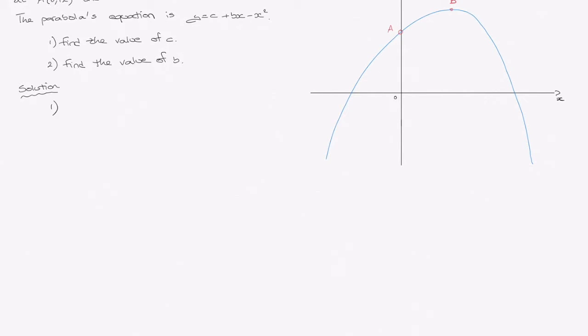Now, to find the value of c, the key thing to notice here, if I recopy this curve's equation, that's y equals c plus bx minus x squared. Well, c here is the y-intercept of this curve. So I'll just write that here, that's the y-intercept.